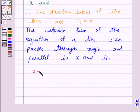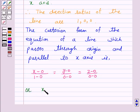(x minus 0) over (1 minus 0) which is equal to (y minus 0) over (0 minus 0) equal to (z minus 0) over (0 minus 0), or x over 1 is equal to y over 0 is equal to z over 0.